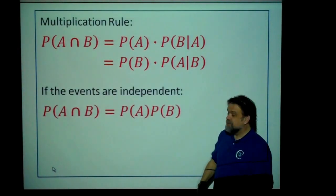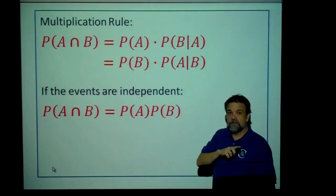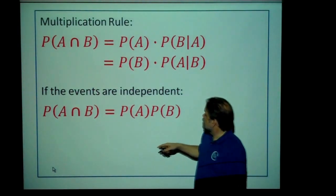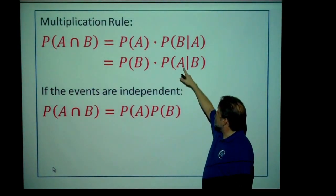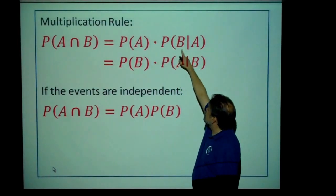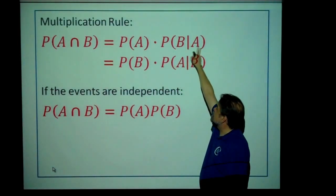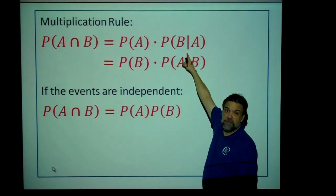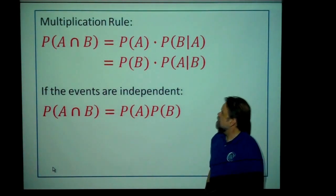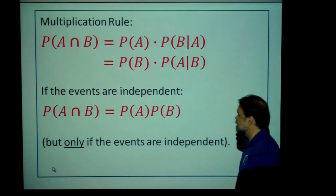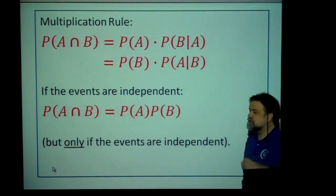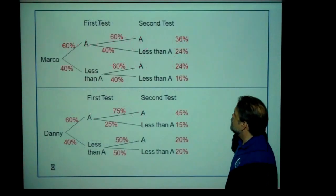If the events are independent, then the probability of A times the probability of B given A would really be the same thing as just the probability of B happening. This is only true if the events are independent. Let's look at that a little more closely with Marco and Danny's situation.